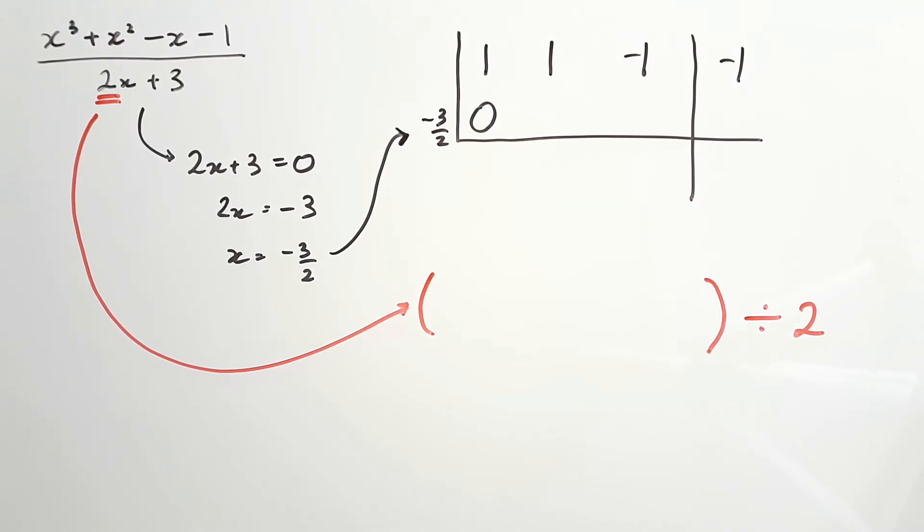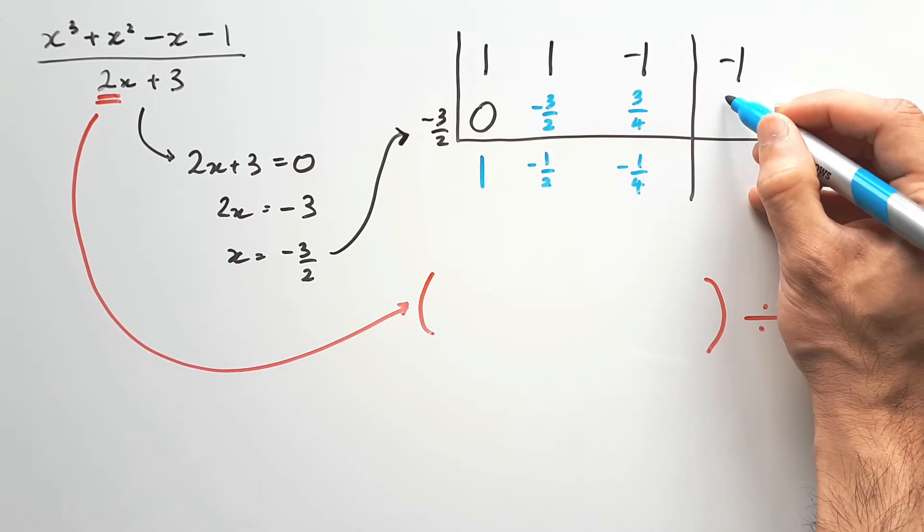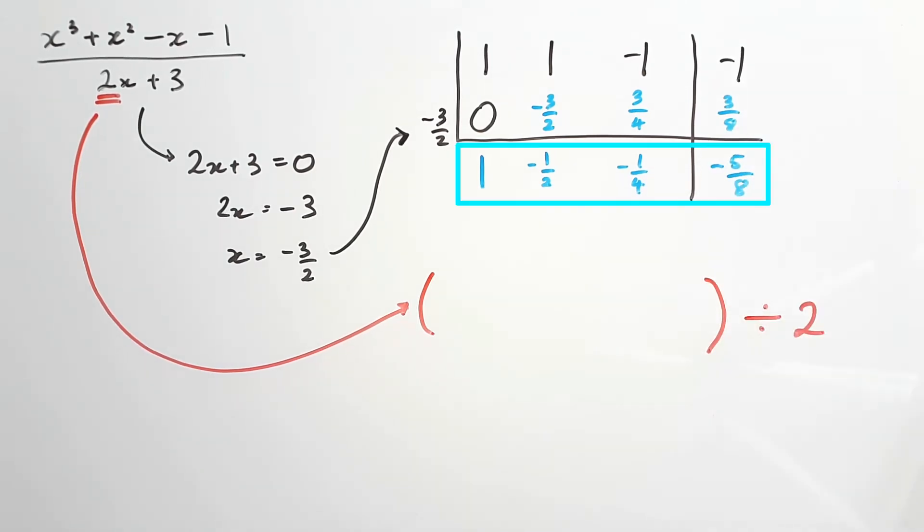So now if we just go through the motions of doing synthetic division, adding and multiplying as we go, we'll end up with these numbers: 1, negative half, negative 1 on 4, and negative 5 on 8.